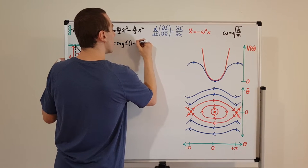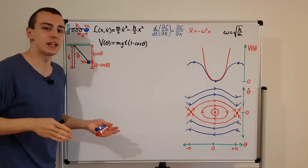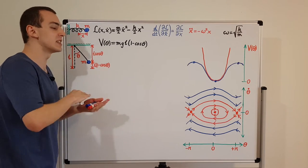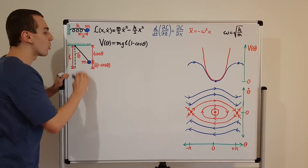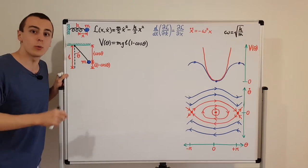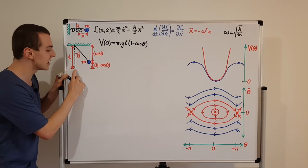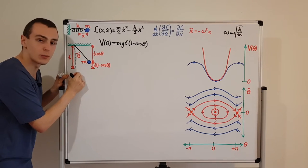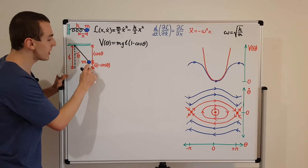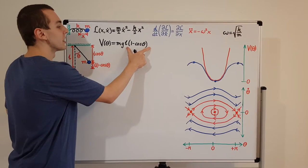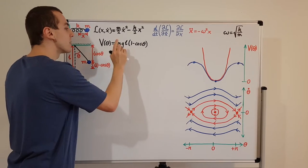We need to set a zero for the potential energy. I'm setting the equilibrium position to correspond to zero potential energy — that is an arbitrary but convenient choice. So this is the potential energy at the lowest point: V equals zero there. Then we're interested in the height above that zero, which is L times one minus cosine theta. So we have mgh, where h is the height of the mass above the zero position — the gravitational potential energy.